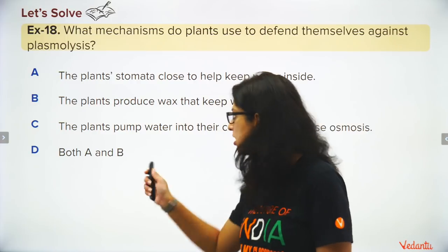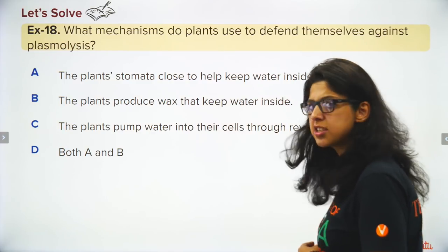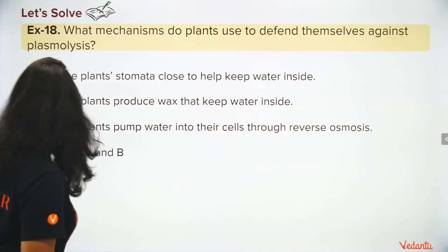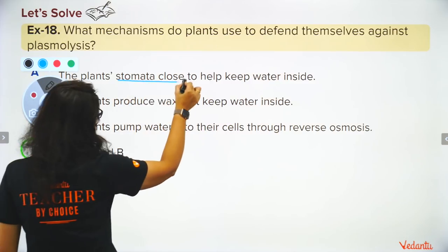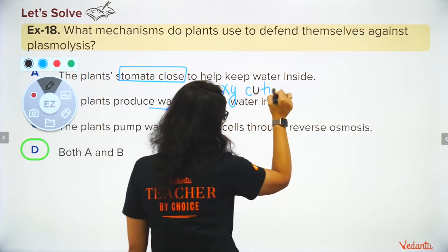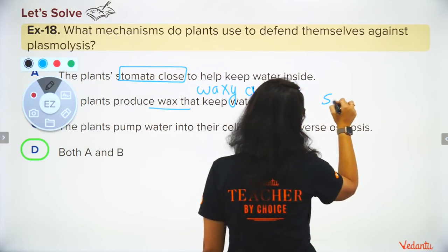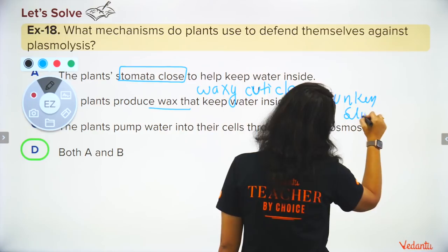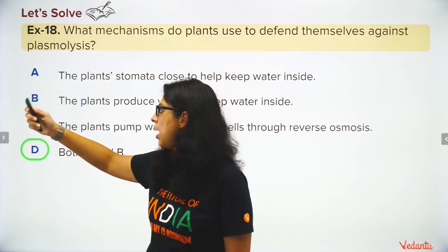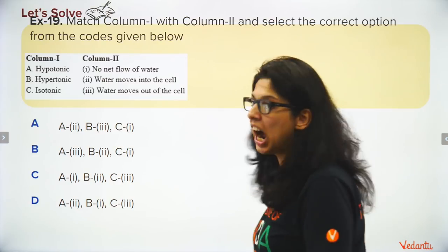How do plants defend themselves against plasmolysis and wilting? Plants close their stomata during peak sunlight (around noon) and produce a waxy cuticle — especially desert plants — to prevent water loss. They also have sunken stomata to protect against excessive transpiration.